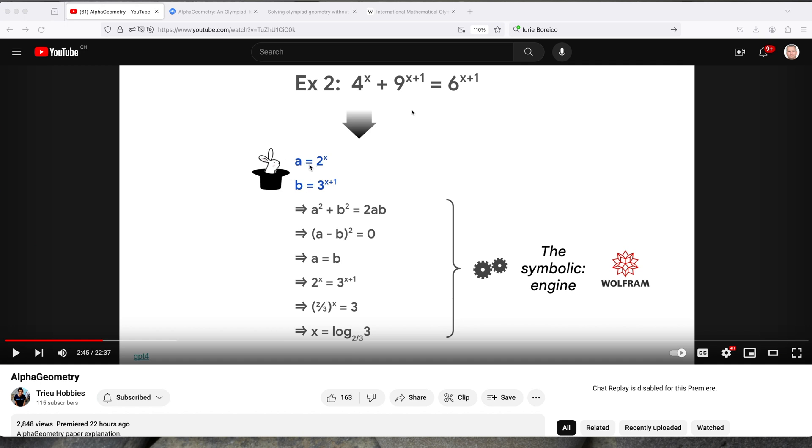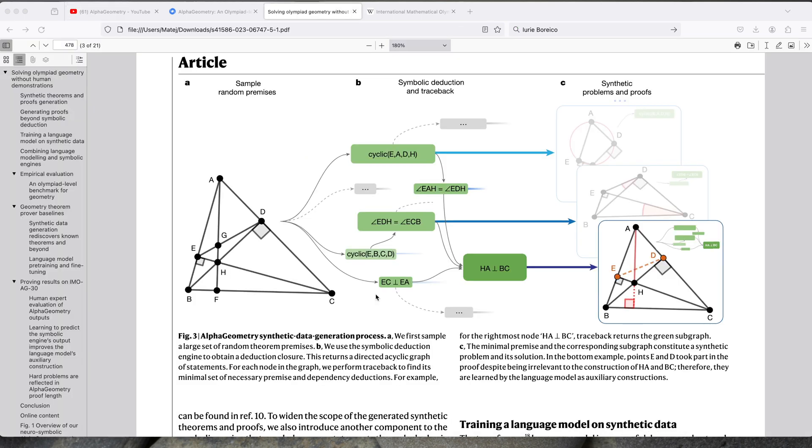What they couldn't do is this magic rabbit trick. So coming up with this A is equal to 2 to the x power, and B equal to 3 to the x plus 1 power. The second key concept is that all of the data used to train this AlphaGeometry is synthetic data.